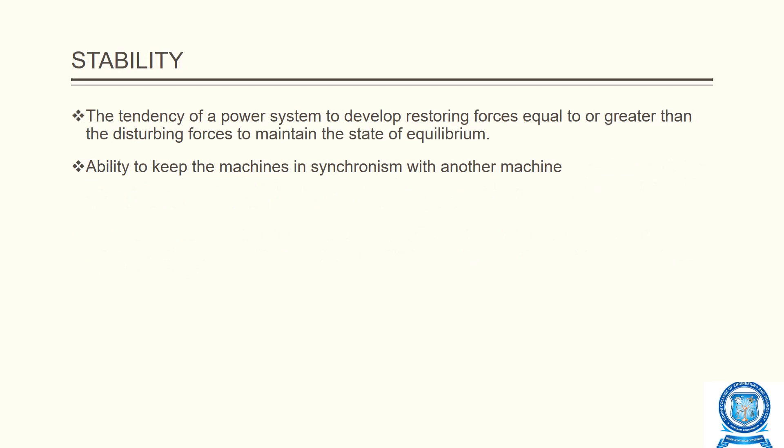The stability of a power system is defined as the ability of the power system to return to stable operation when it is subjected to a disturbance, whether small or large. It can also be defined as the tendency of a power system to develop a restoring force equal to or greater than the disturbing force to maintain the state of equilibrium. The ability to keep machines in synchronism with one another is what we call stability.